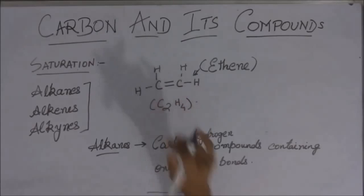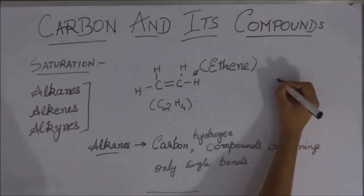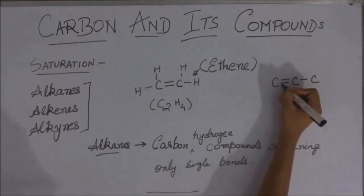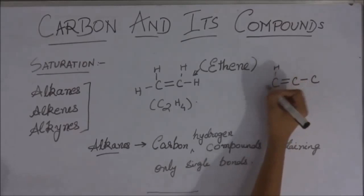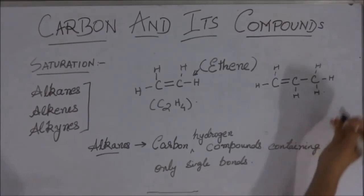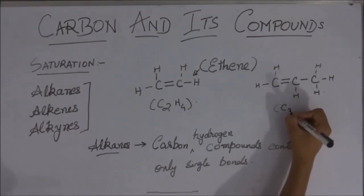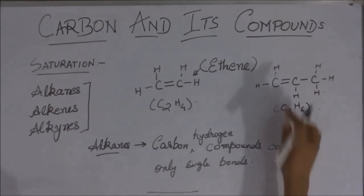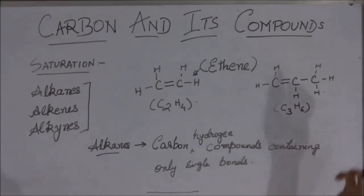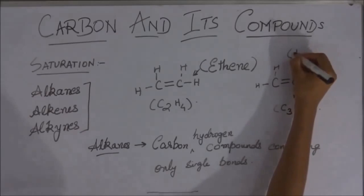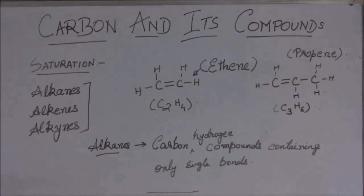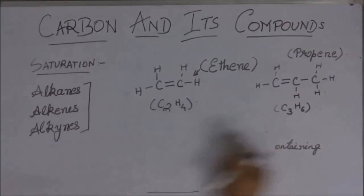Ethene is a two-carbon compound. Similarly, there can also exist a three-carbon compound. Balancing the hydrogens gives us C3H6, where one pair of carbons is bonded by a double bond and the other by a single bond. This particular compound is known as propene.